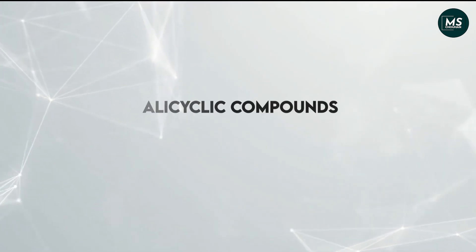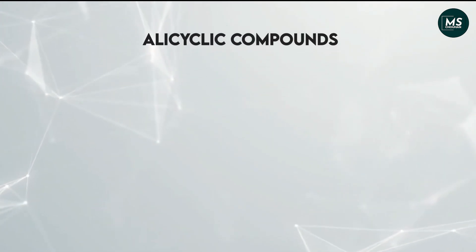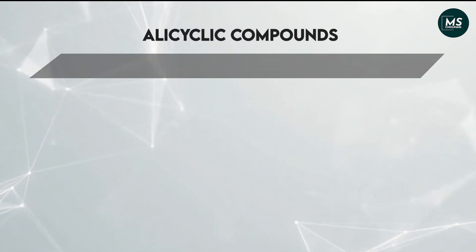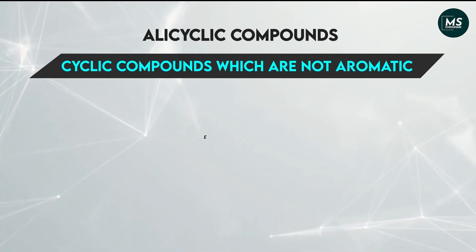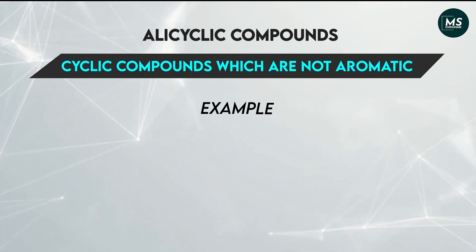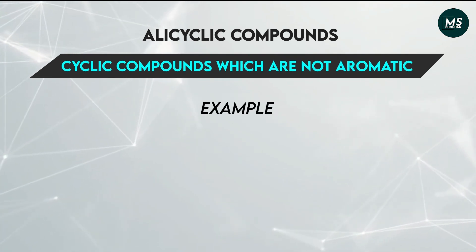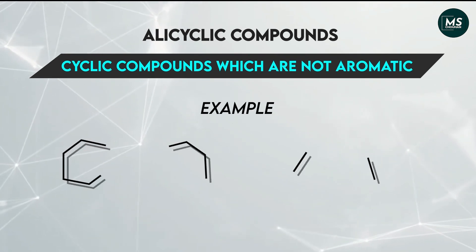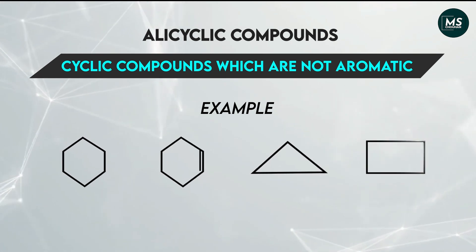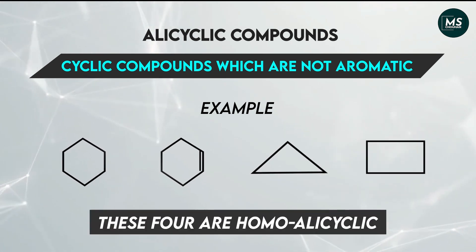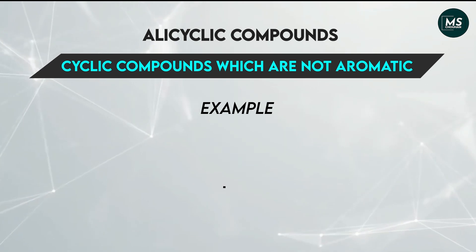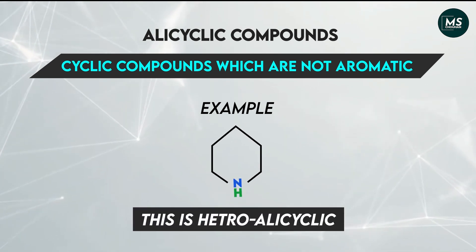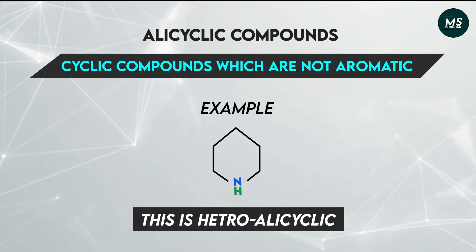Alicyclic compounds are cyclic compounds which are not aromatic. These four compounds are examples of homoalicyclic, and this compound is an example of heteroalicyclic.